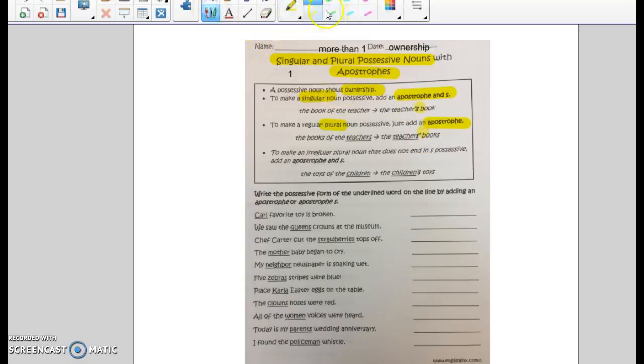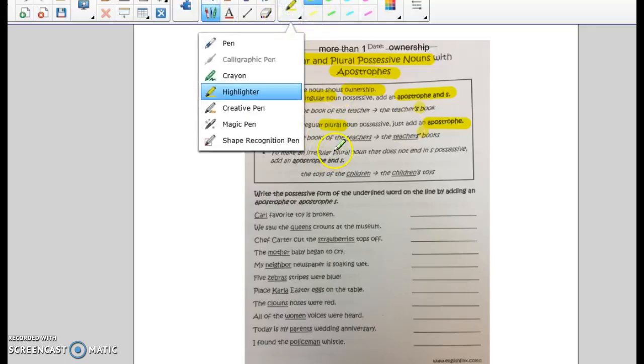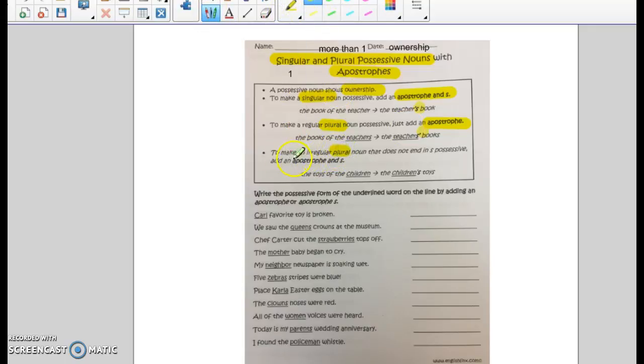To make an irregular plural possessive, you just add apostrophe S. You don't need to put the S on the end because we know children is plural, it's more than one child. So you can just add apostrophe S. Cover it up, and it is still children, it's still plural.